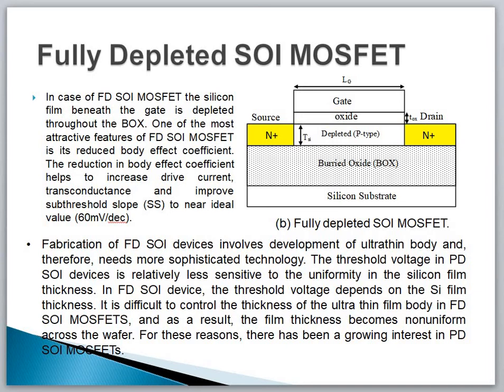In the fully depleted SOI device, the threshold voltage depends on the silicon film thickness, whereas in partial depleted SOI devices it is relatively less sensitive to silicon film thickness uniformity. It is difficult to control the thickness of the ultra-thin body in fully depleted SOI MOSFETs, and as a result the film thickness becomes non-uniform across wafers. For this reason, there has been a growing interest in partial depleted SOI MOSFETs, and we prefer partial depleted MOSFETs over fully depleted SOI MOSFETs.